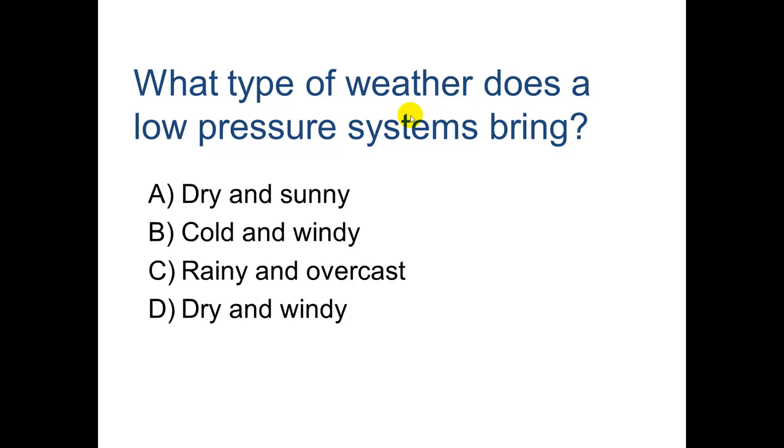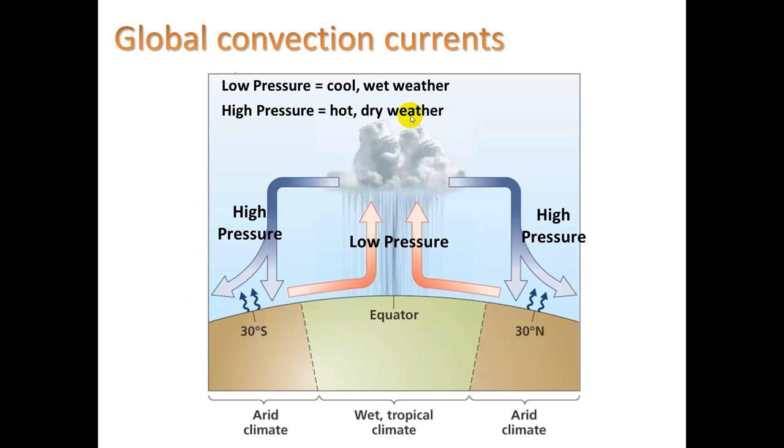What type of weather does a low pressure system bring? Go ahead and make your choice. All right, if you said rainy and overcast, you are correct. Let's take a look at why that is. Low pressure means that the air is rising. And as it rises, it cools. As it cools, the water vapor condenses into clouds. And if those droplets get big enough, it rains.